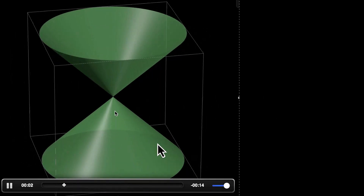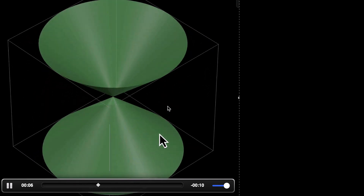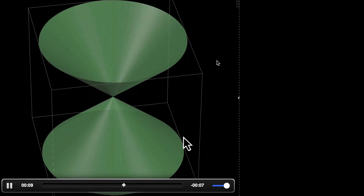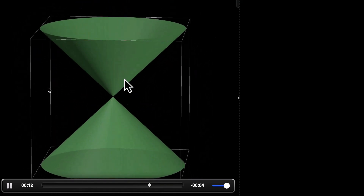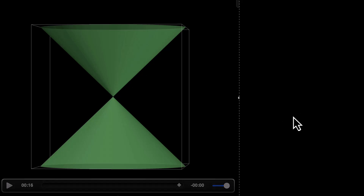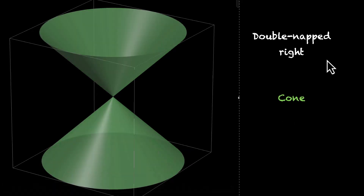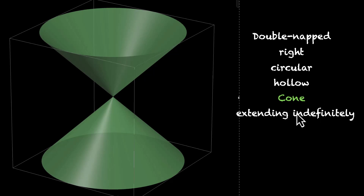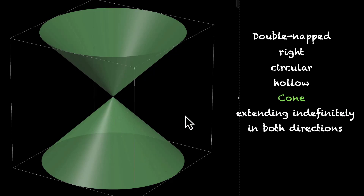What exactly is a cone? This is what the cone looks like in 3D — this is what we'll slice. It has two parts: the upper nap and the lower nap. This is a double-napped right circular hollow cone that extends indefinitely in both directions. It's hollow, it's circular — the base is circular — and it's right, which means it's perpendicular to the axis. It also extends indefinitely in both directions.